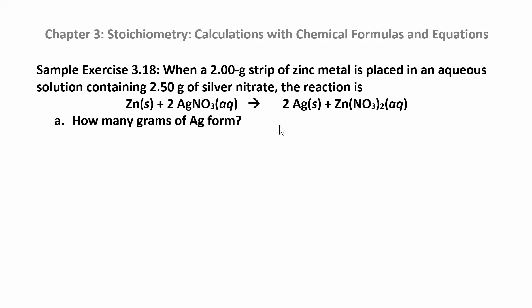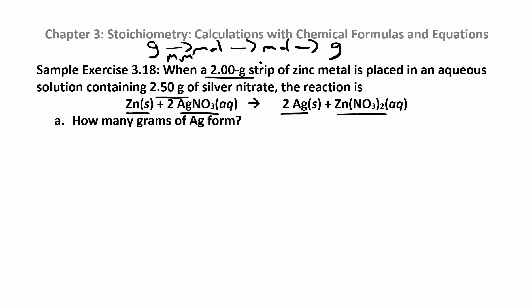You can do a similar problem starting with grams. Here we have zinc reacting with silver nitrate to make silver and zinc nitrate. In limiting reactant problems, the amounts of two reactants are given in grams, so you need to convert: grams to moles, then moles to moles using the equation, then moles back to grams. Each conversion requires a molar mass.